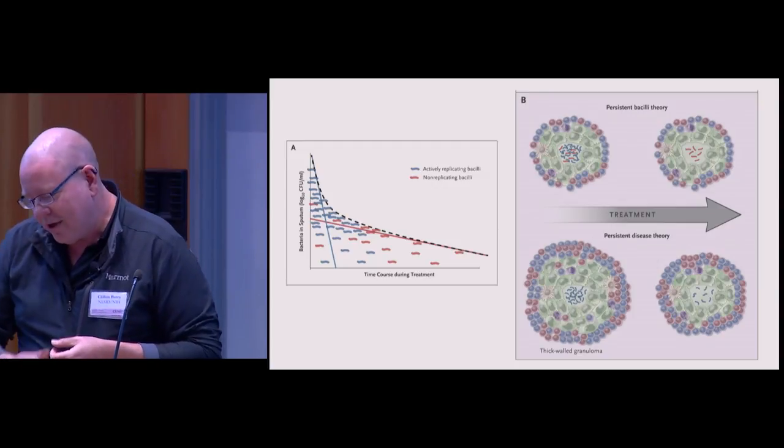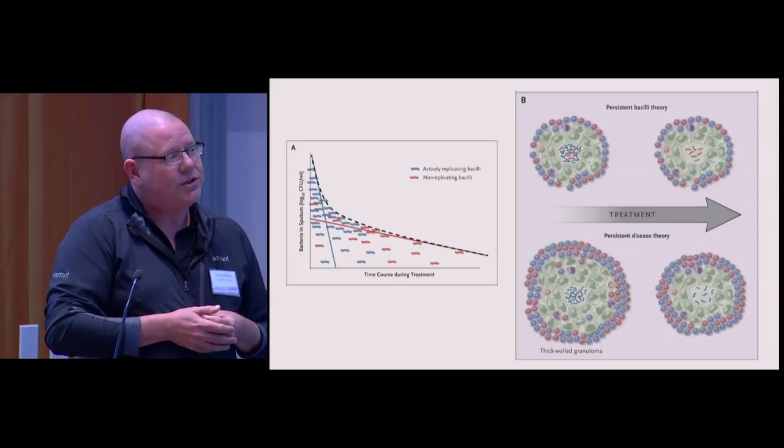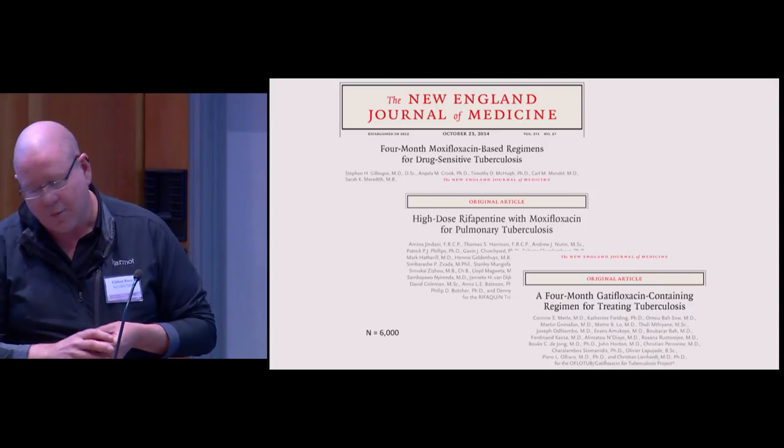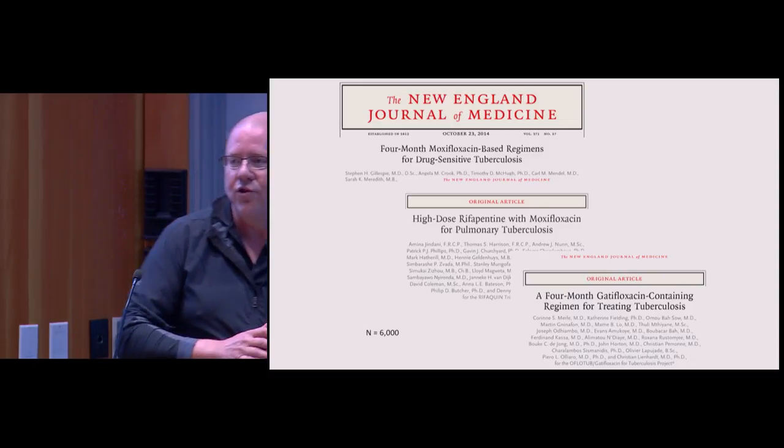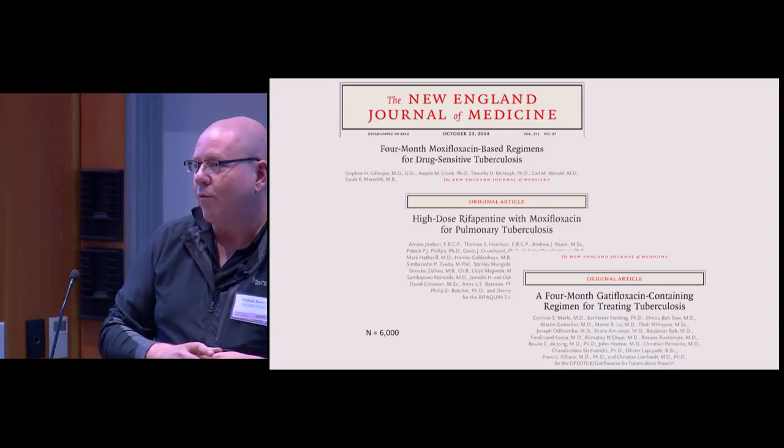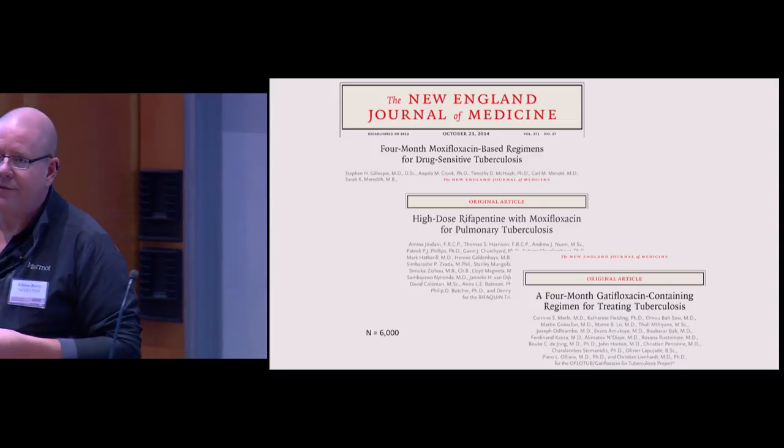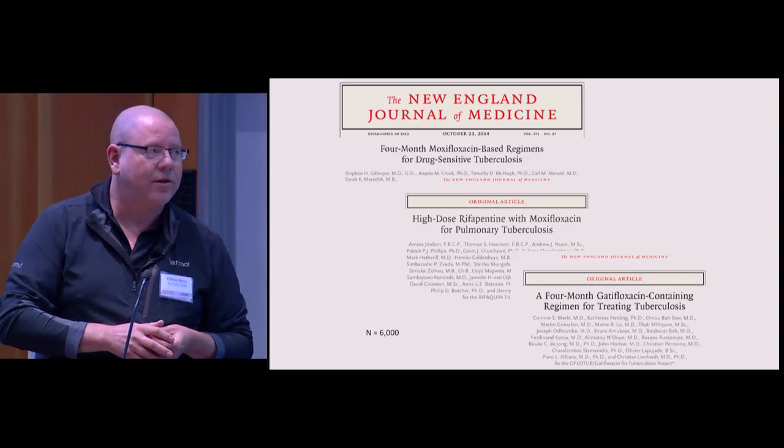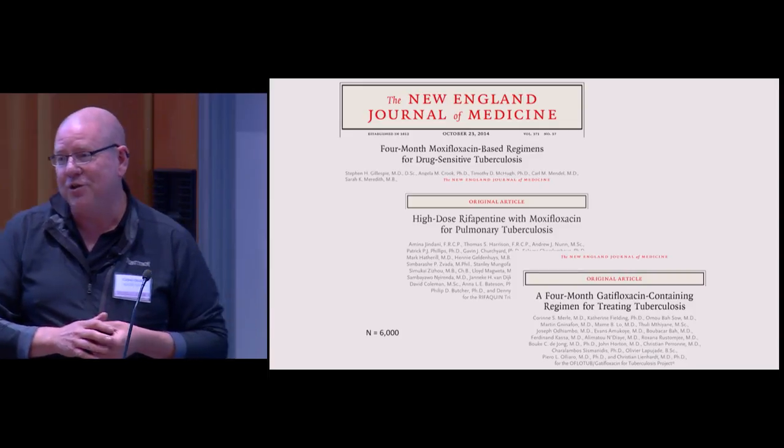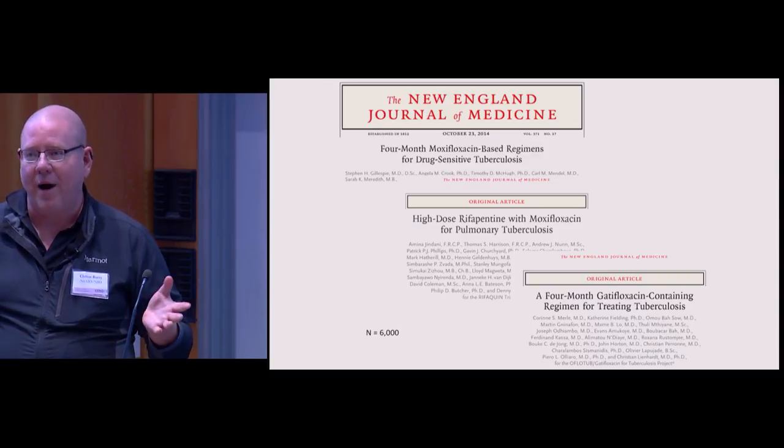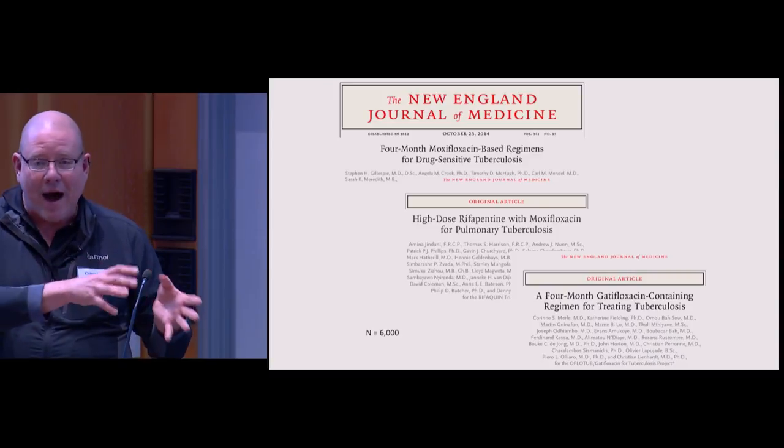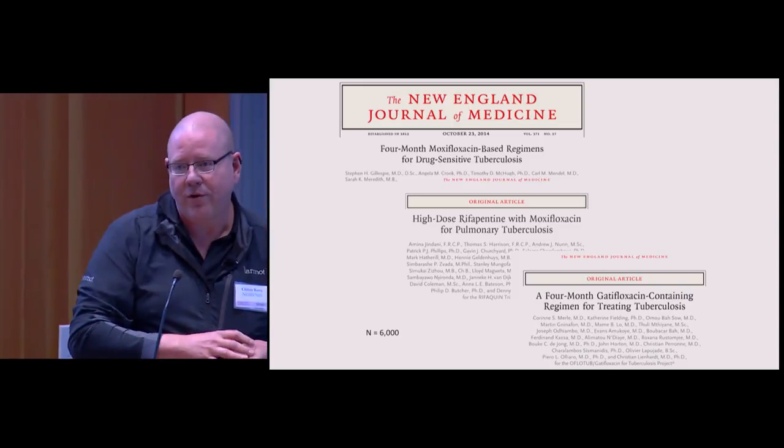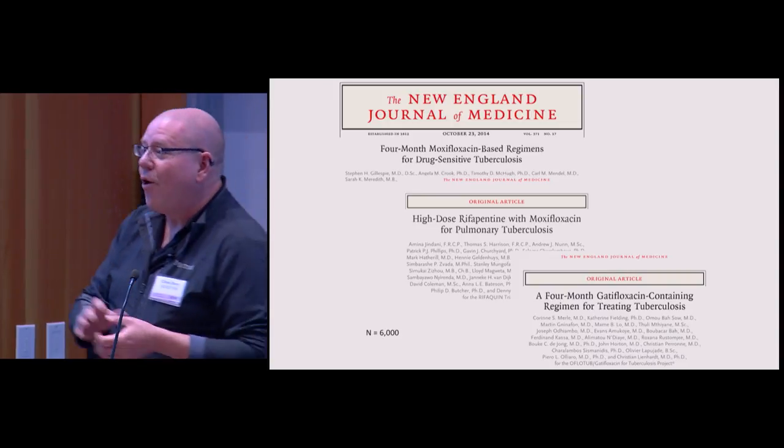This became particularly acute because we saw big failures of vaccine trials and perhaps you're less aware of big failures in the drug space when we tried to shorten therapy to four months by addition of a fluoroquinolone. Three very large phase three studies profoundly showed that was not effective in shortening therapy to three months. That was about 6,000 patients at huge expense. That was like a nuclear bomb went off in the TB drug development space. Every model we had suggested this should have been adequate to treat patients for four months, and yet it clearly wasn't.